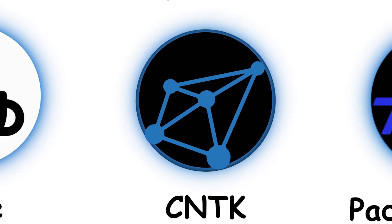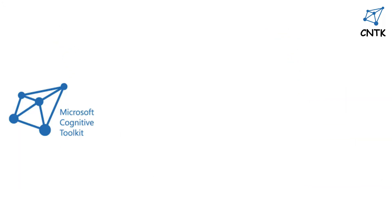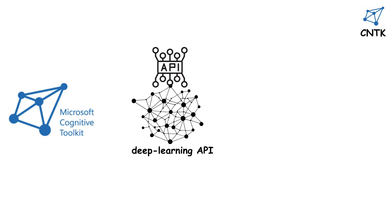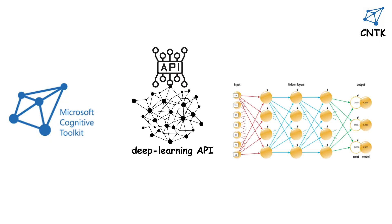CNTK, the Microsoft Cognitive Toolkit, formerly known as CNTK, provides a unified deep learning API that describes neural networks as a series of computational steps via a directed graph.